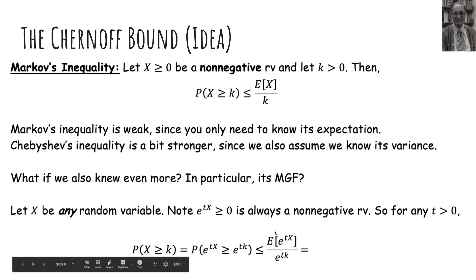So once I have this, then I'm going to apply Markov's inequality because e to the tx is now a non-negative random variable. So I'm going to plug in what I have here. And then actually the top ends up being the moment-generating function of x.